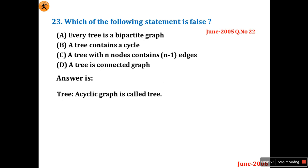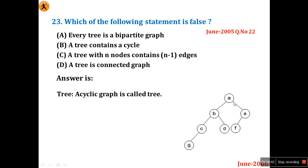That is the definition of a tree: an acyclic graph is called a tree, so option B is wrong. A tree with N nodes contains N minus one edges — already explained, if there are six nodes there are five edges, which holds good for a tree, so this is true. A tree is a connected graph — definitely, if it is disconnected it is not a tree, it is a forest. So options A, C, D are correct; only the false statement is option B: a tree contains a cycle.